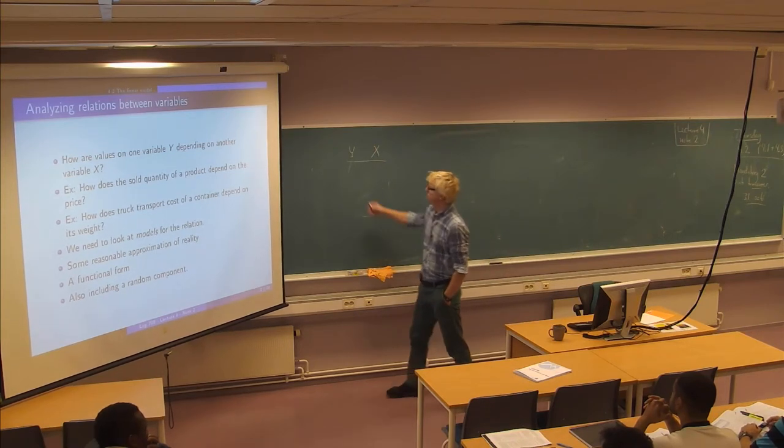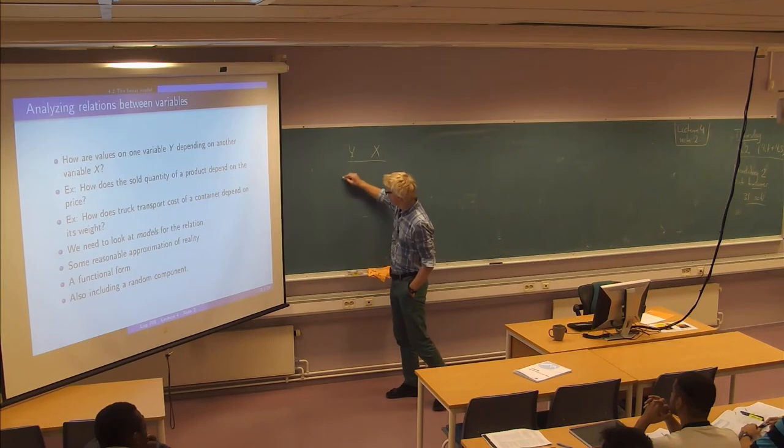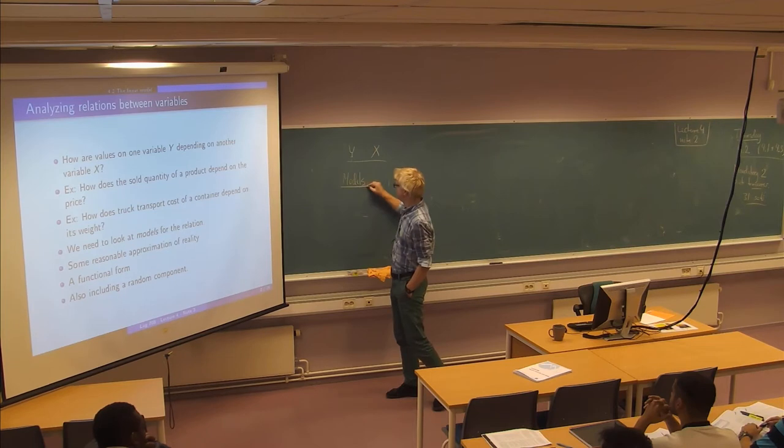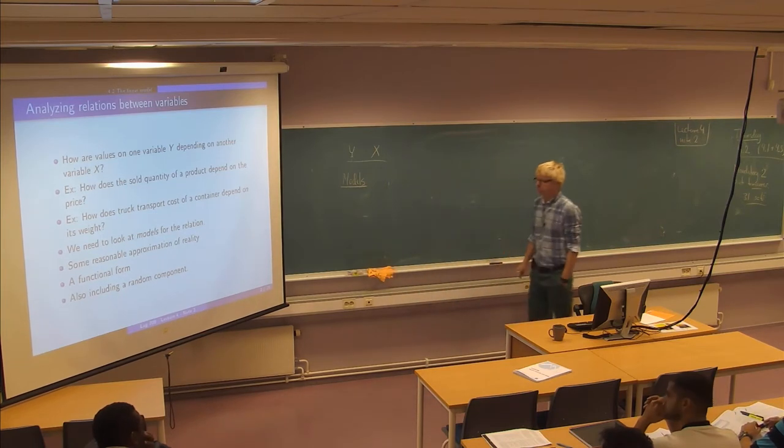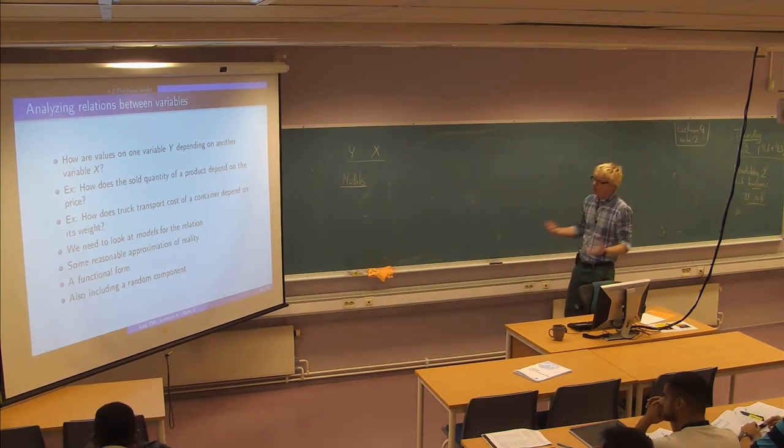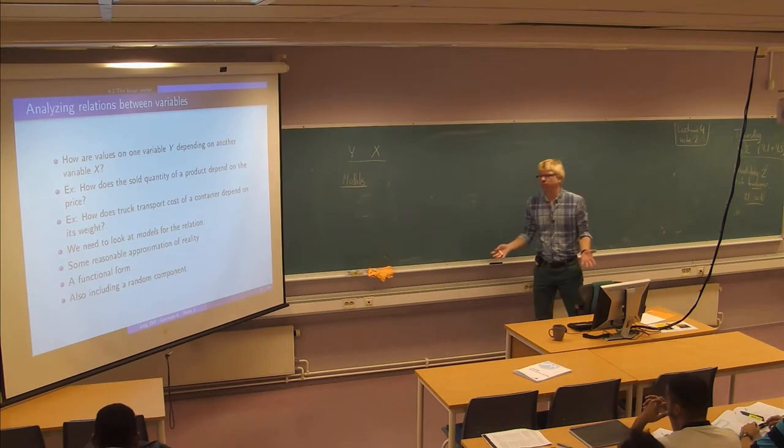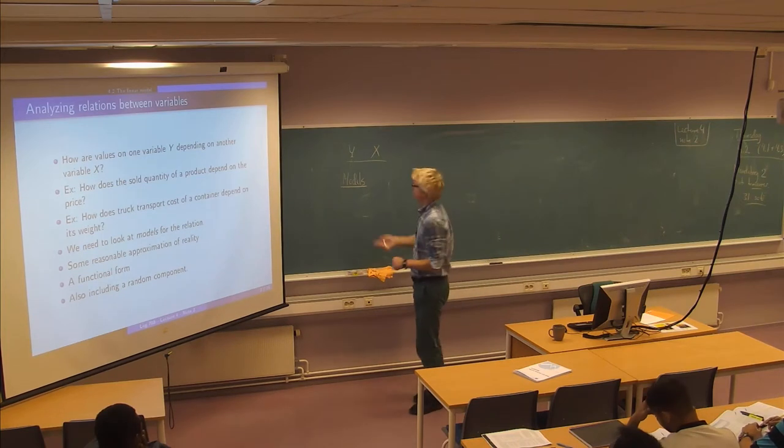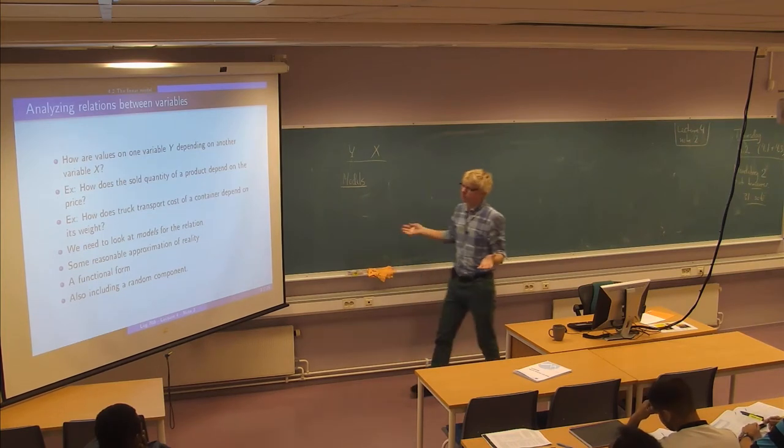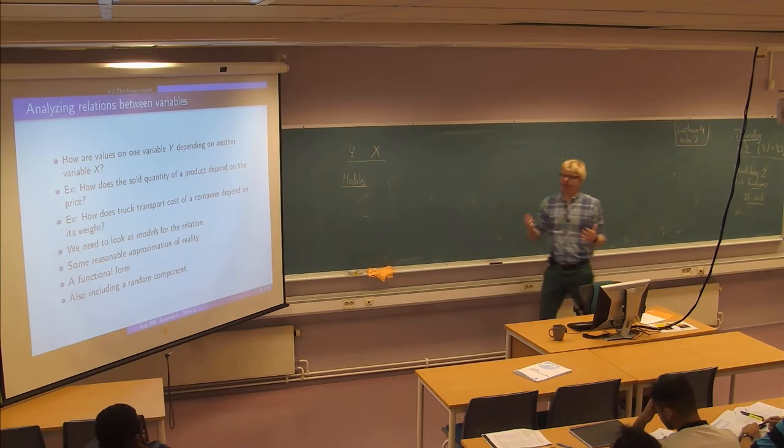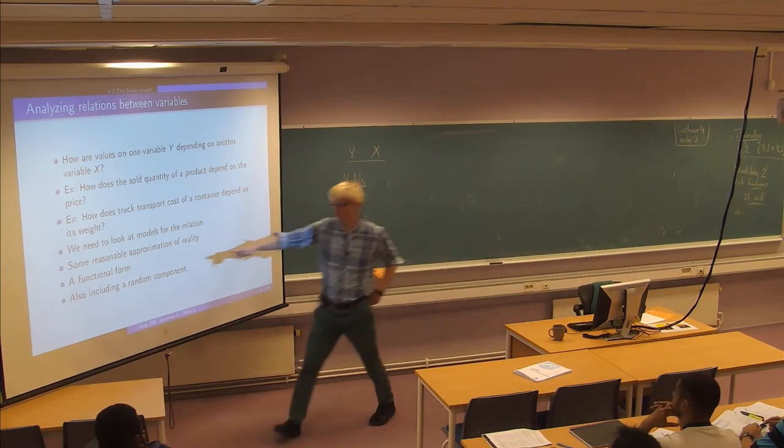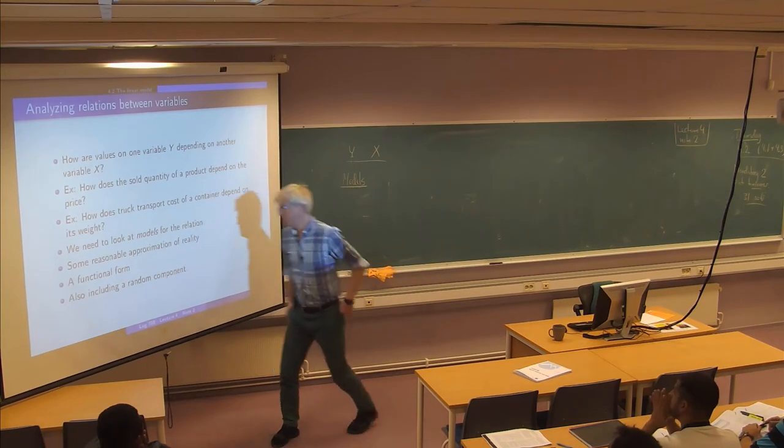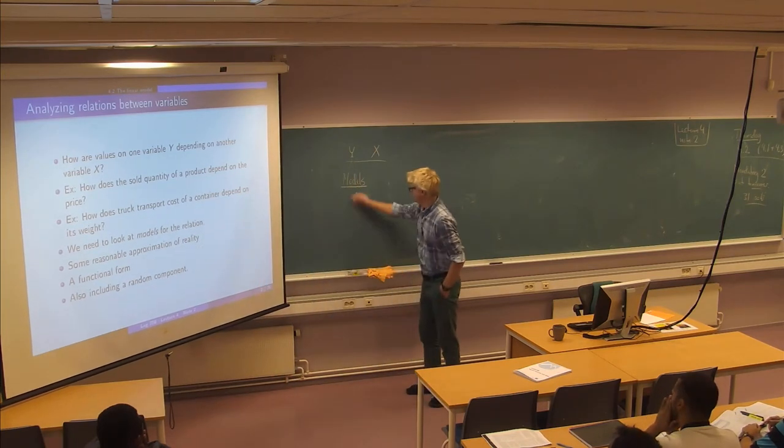So what we need to do is we need to think about models as I talked briefly about last week. And a model is just some reasonable approximation of reality. When we talk about the relationship between two variables, it's very natural to think about describing some kind of a functional form or a curve.